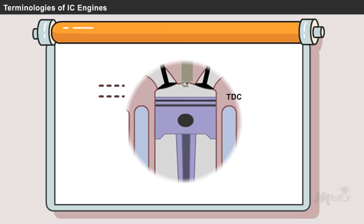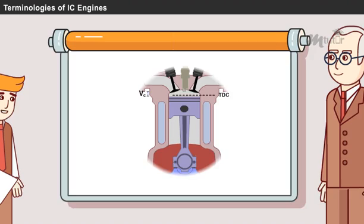Clearance volume. When the piston is at top dead center, the volume contained in the cylinder above the top of the piston is called as clearance volume.